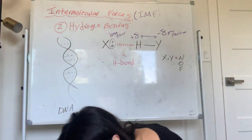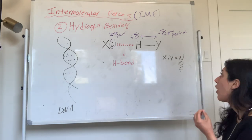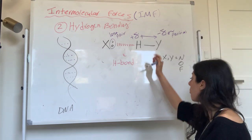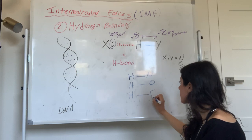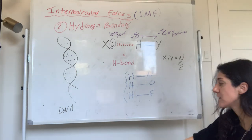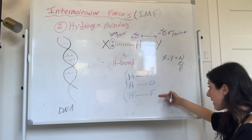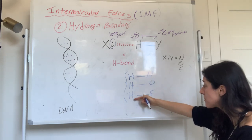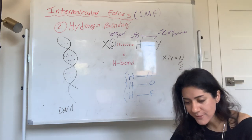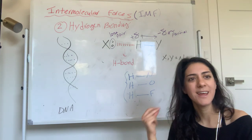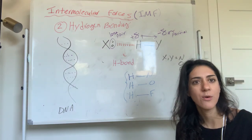To have hydrogen bonding, you need to have H–N, H–O, or H–F. The hydrogen has to be directly attached to nitrogen, oxygen, or fluorine. Why? Because these are electronegative atoms with high EN values, so in all three cases hydrogen will be desperate for electrons and will be attracted to the lone pair of the neighboring atom.